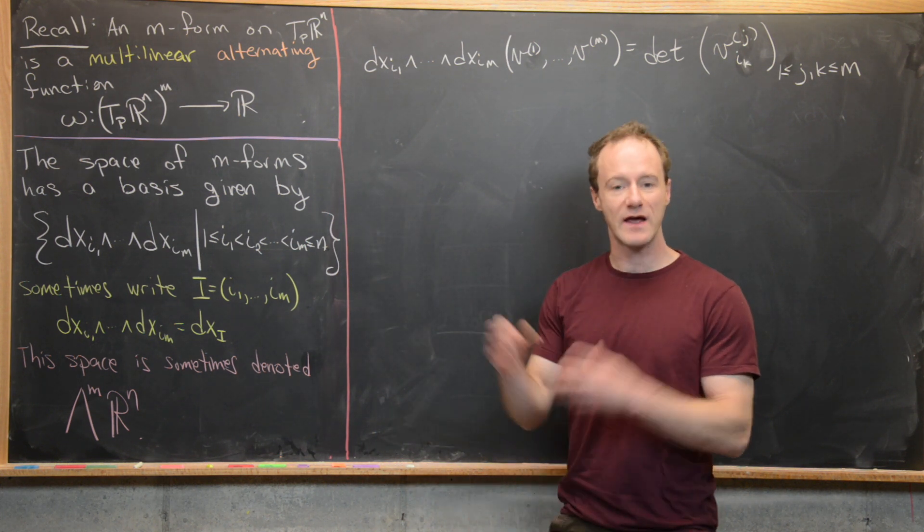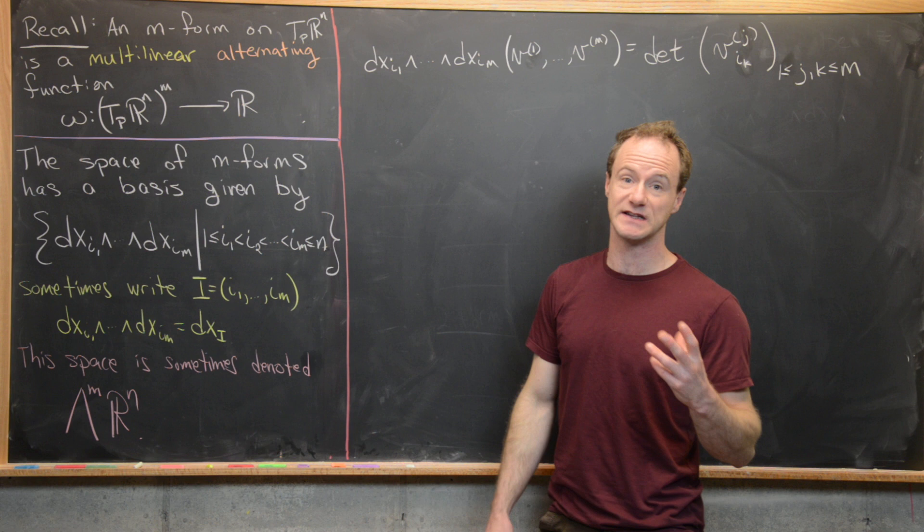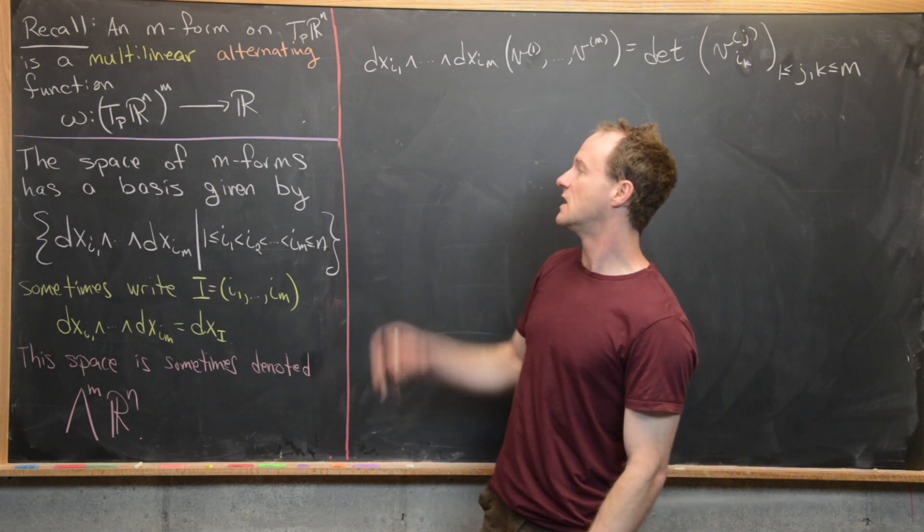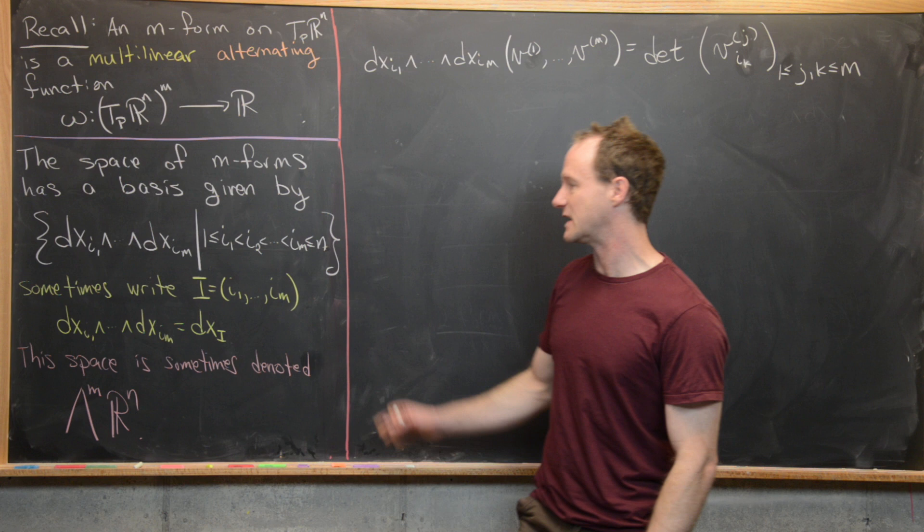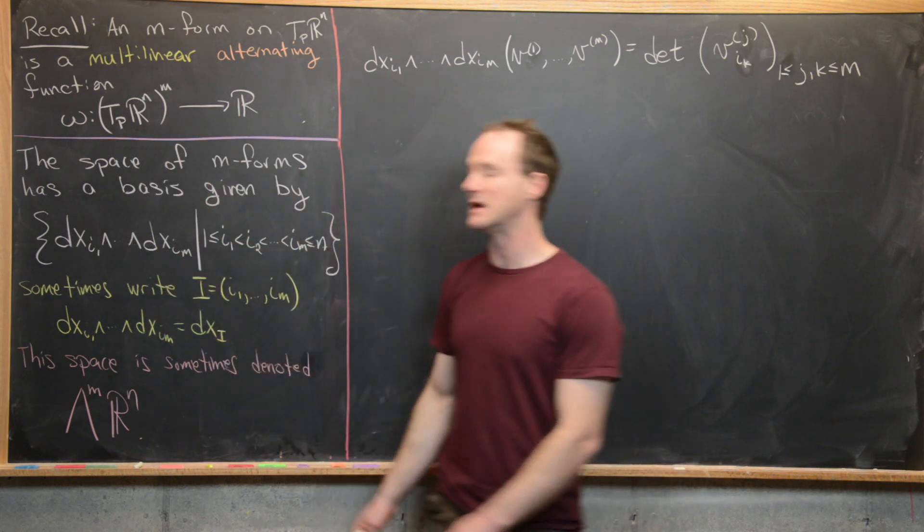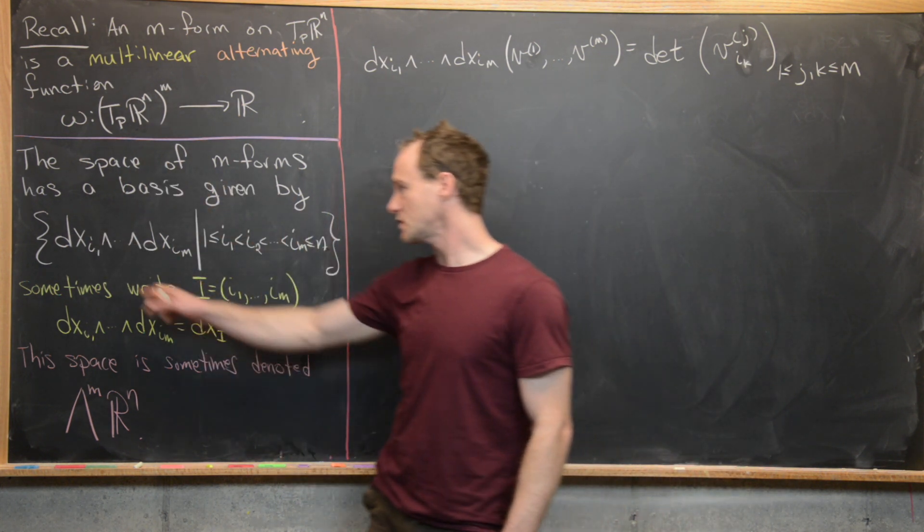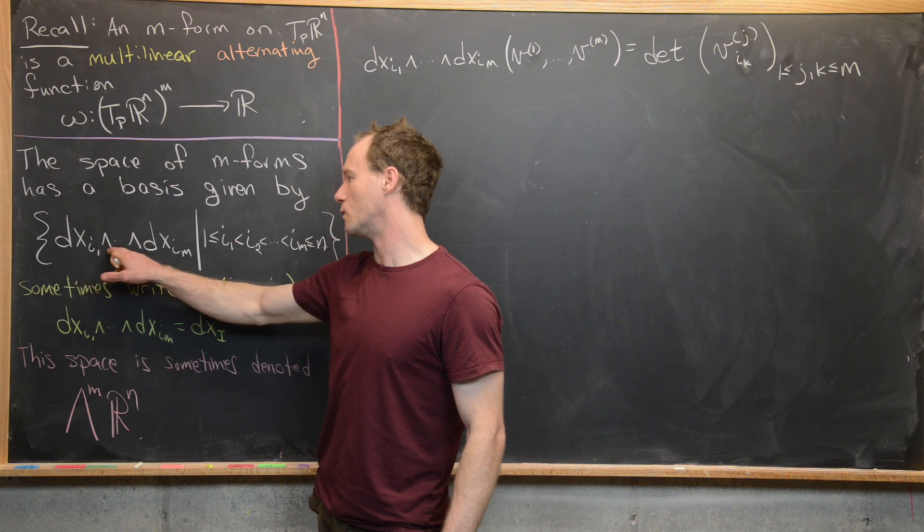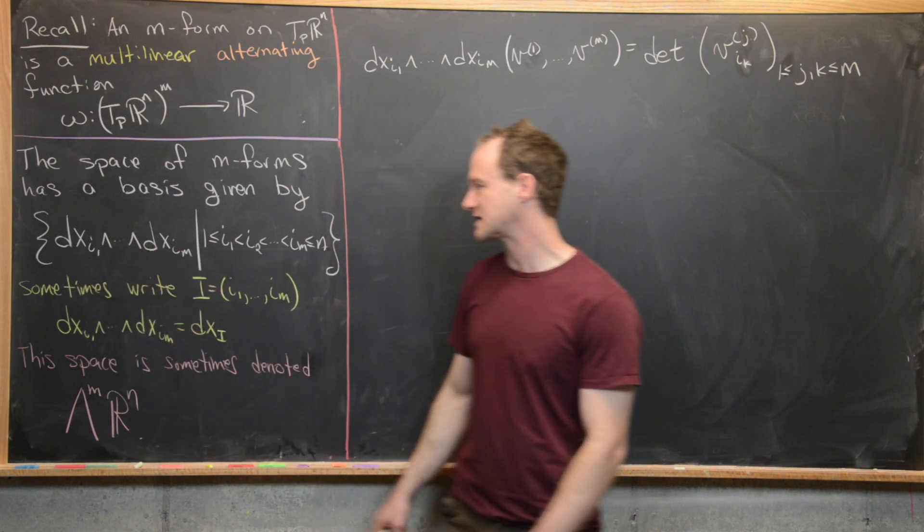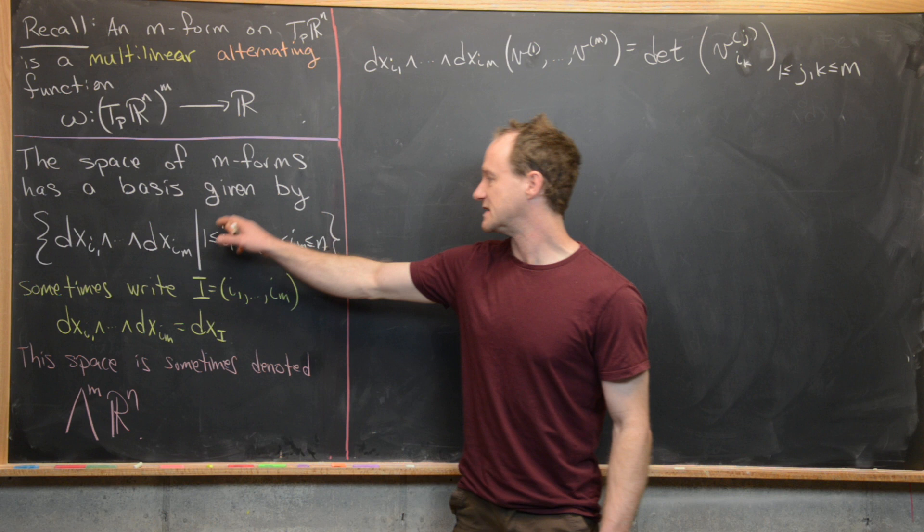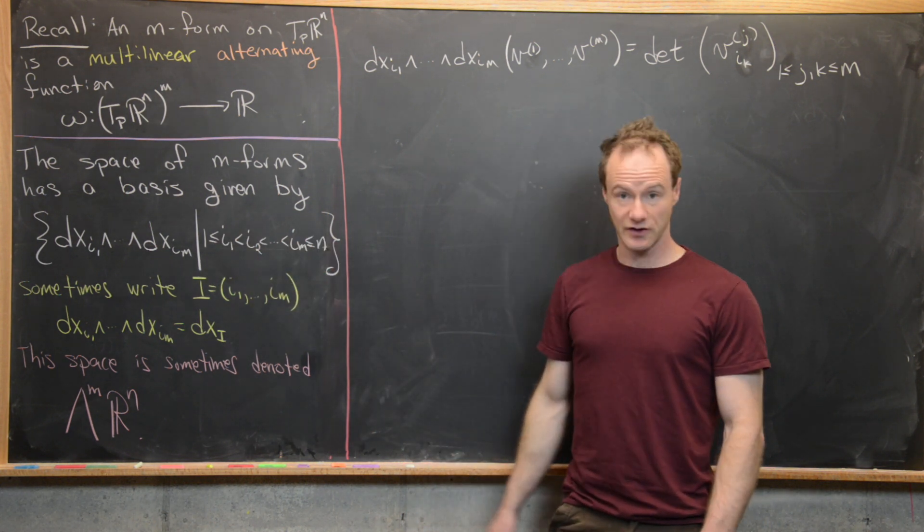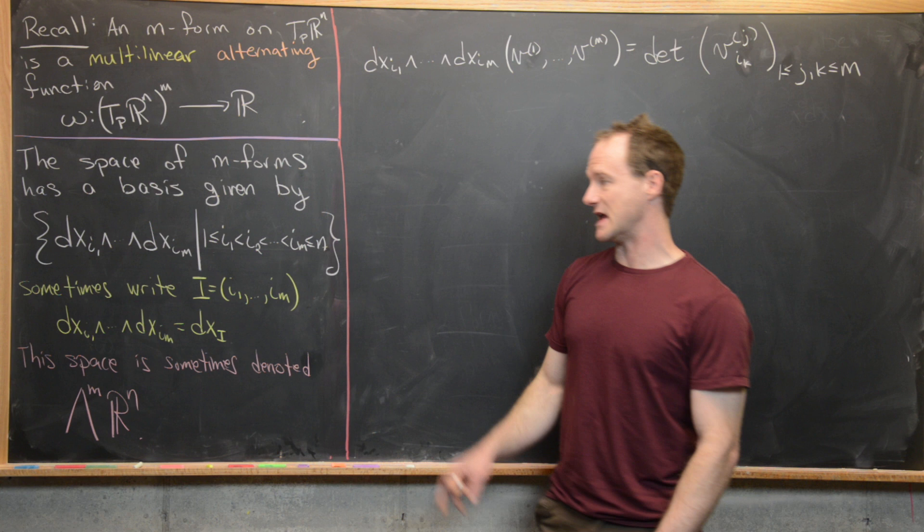The next thing that we kind of waved our hands at before and proved in some special cases was that the space of M forms has a basis given by these following elementary M forms, which are DXI1 wedge all the way up to DXIM, where these IJs are strictly increasing, and they're between 1 and N.